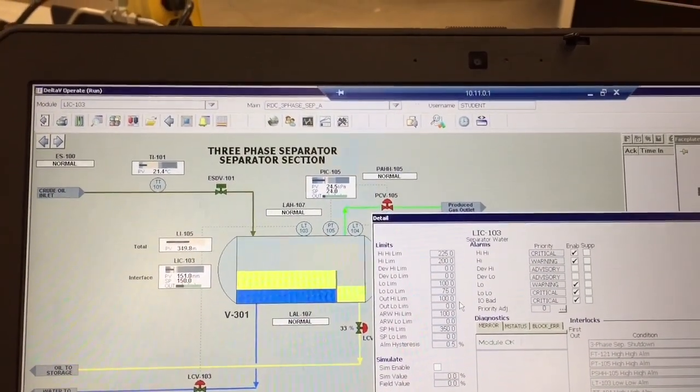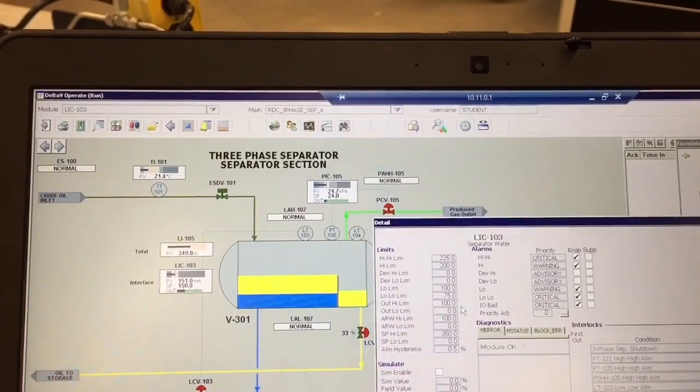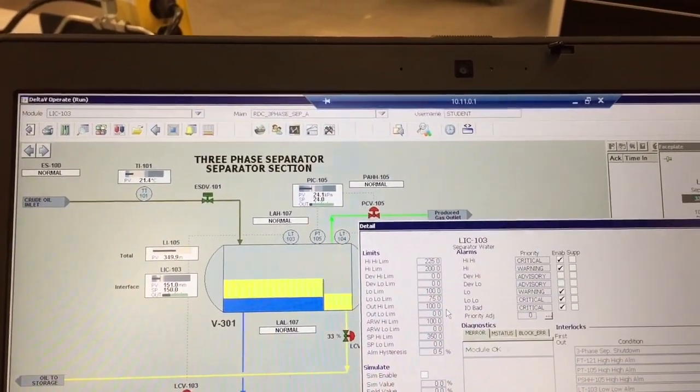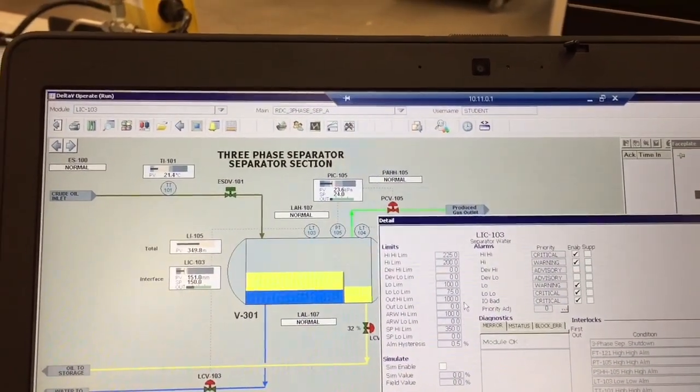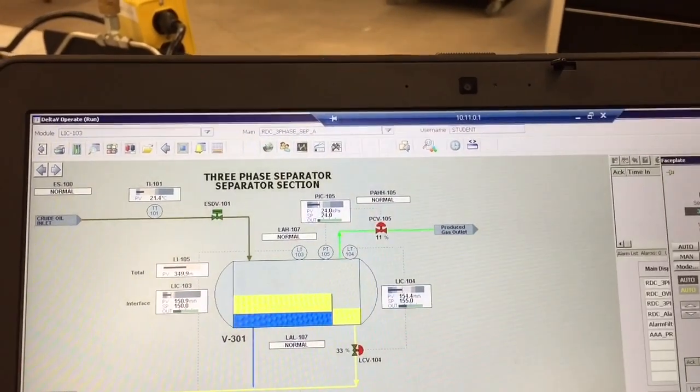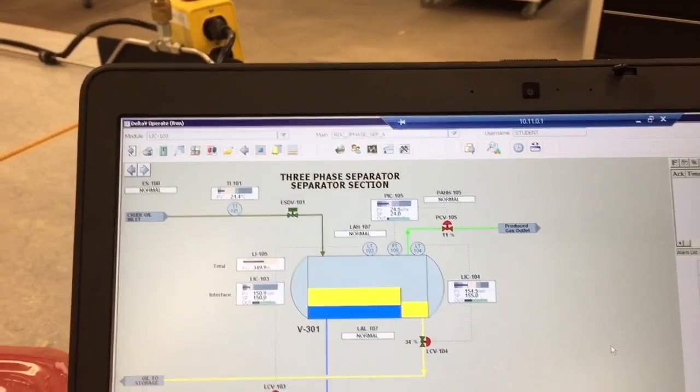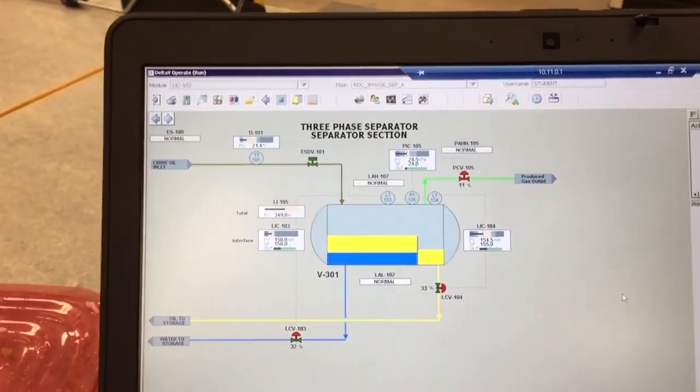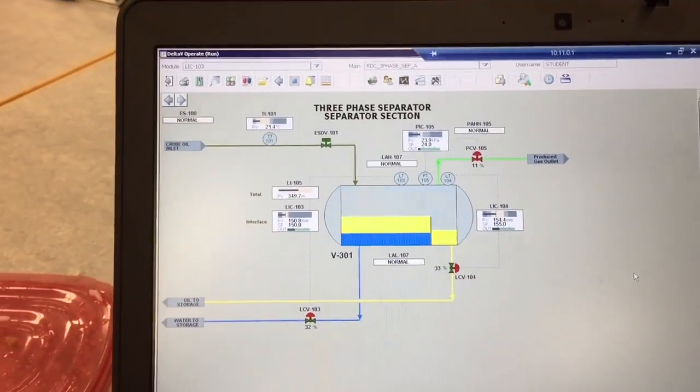And if we go down too low, it'll see the end of the probe and that tends to mess up. Our process will shut down on a low level just so we don't have any oil going into our water tank. So probably one of the slowest loops on our process out of all of our trainers as well.